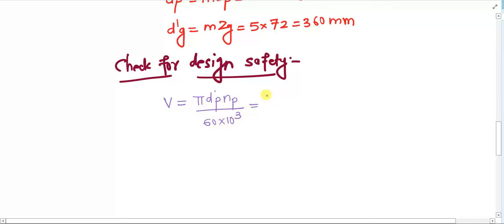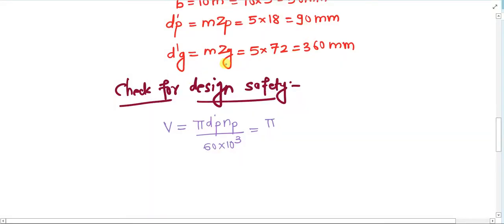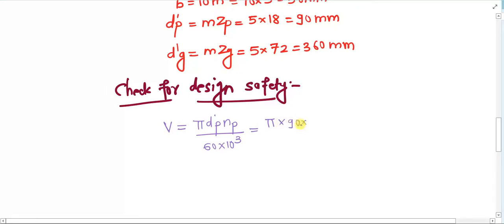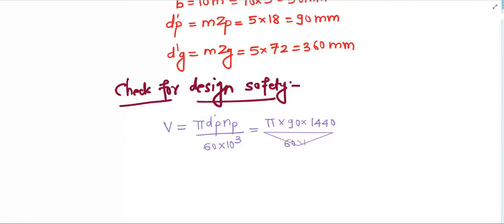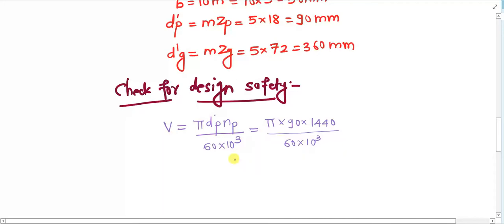The formula is: v = π × d_p' × N / (60 × 10³). The value of d_p' is 90 mm, and the rotational speed is 1440 rpm. Putting these values into the calculator, the velocity we get is 6.78 meters per second. Our initial guess was 5 meters per second.